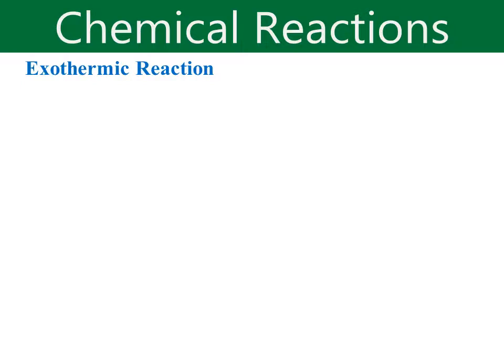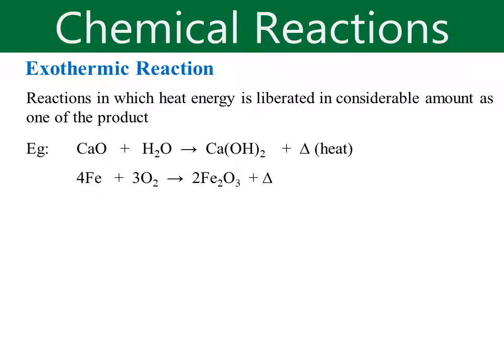Example of exothermic reaction: CaO (quicklime) plus water gives calcium hydroxide plus heat. You can try this — visit any paint shop, get quicklime (calcium oxide in solid white form), bring it home, add a little water to it in a container, and you will see it releases heat. The entire container will gradually become very hot. Another example: Iron plus oxygen forms ferric oxide, liberating heat. This is common during rust formation.